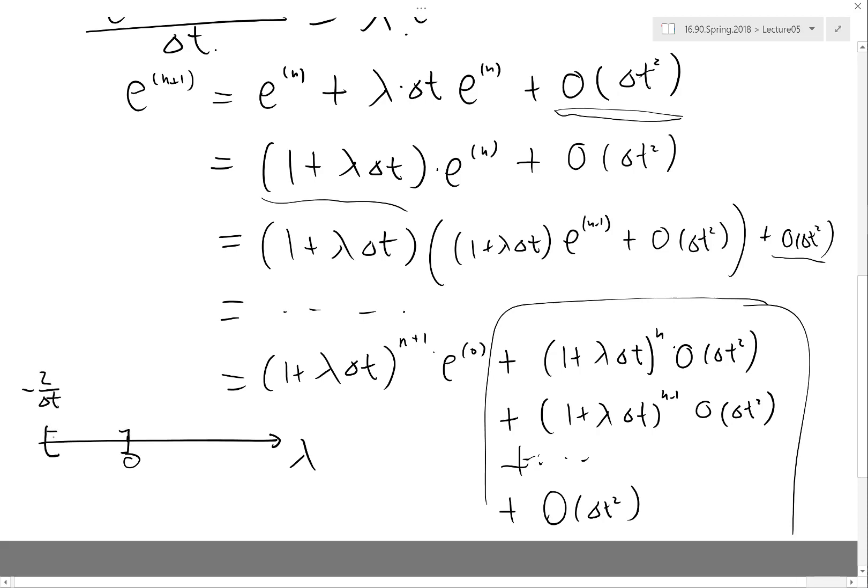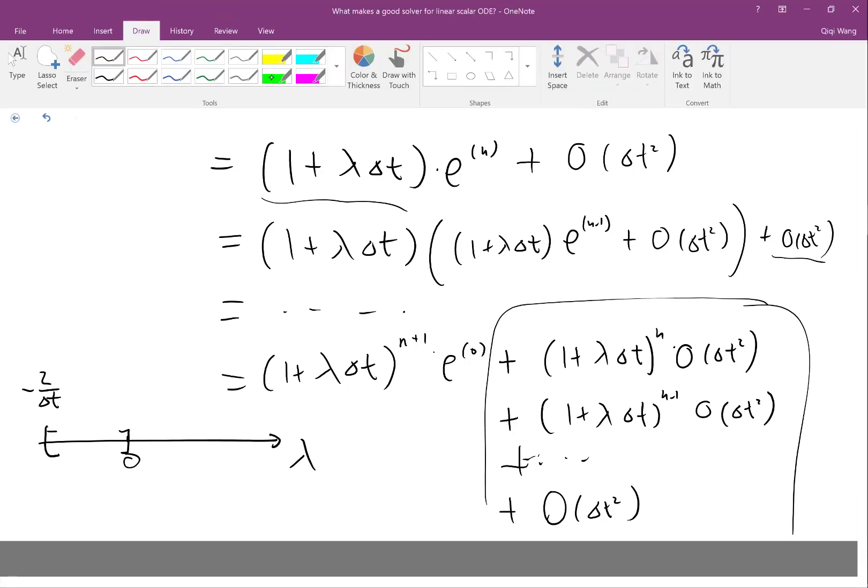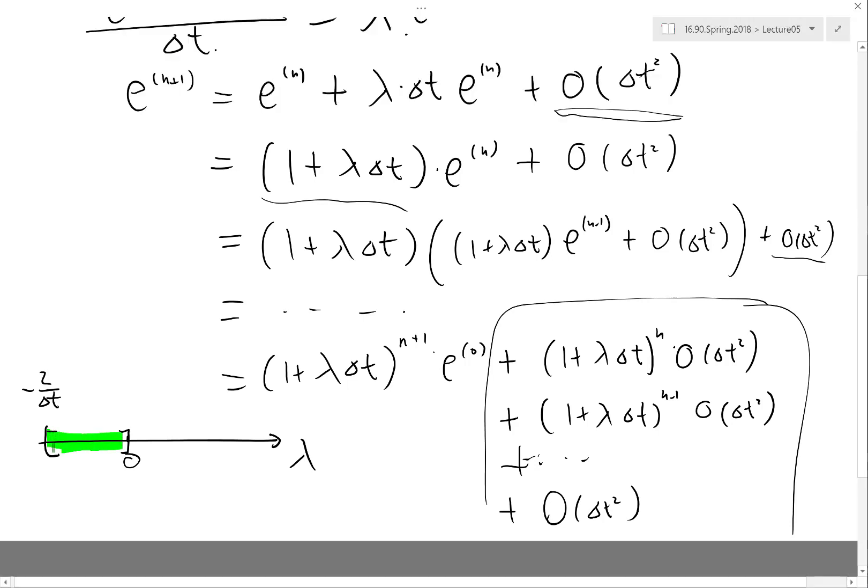So it's this bound: minus two over delta t and zero. In this region, let me use green to say this region is stable. Anything outside the region is unstable.